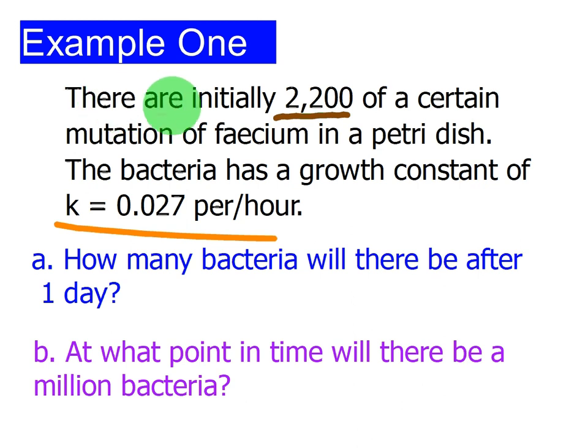Our first example says there are initially 2,200 of a certain mutation of fecium in a petri dish. A lot of times when we're talking about exponential growth and decay, we will be talking about living organisms and, in many cases, bacteria. The bacteria has a growth constant of K equals 0.027 per hour.